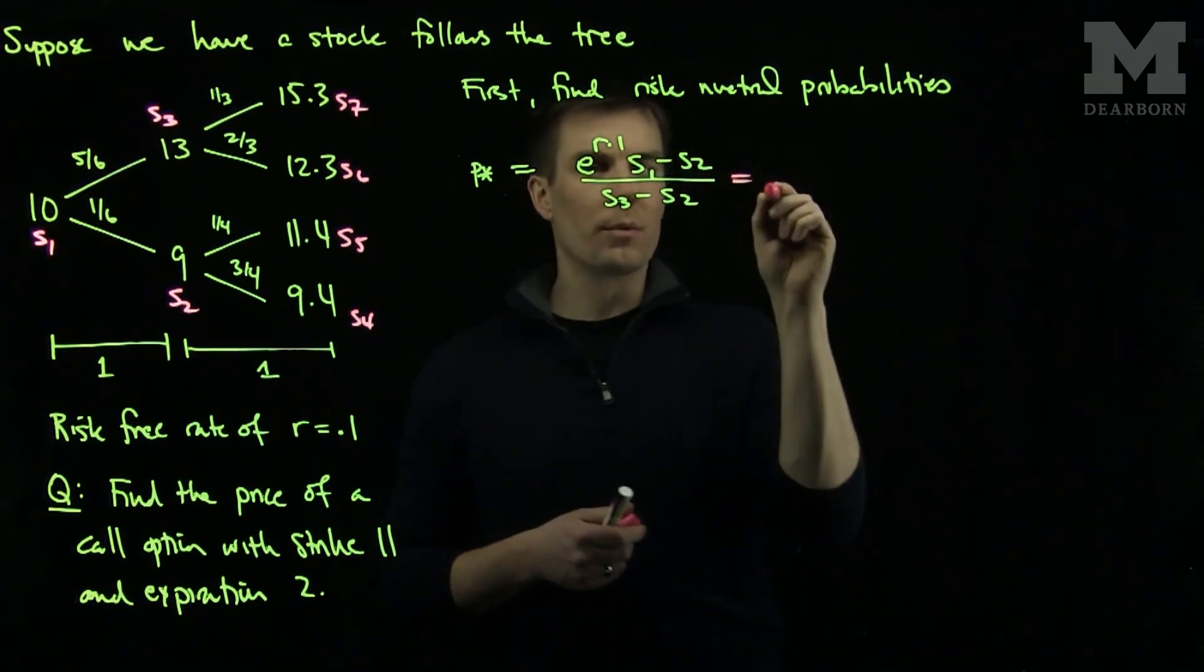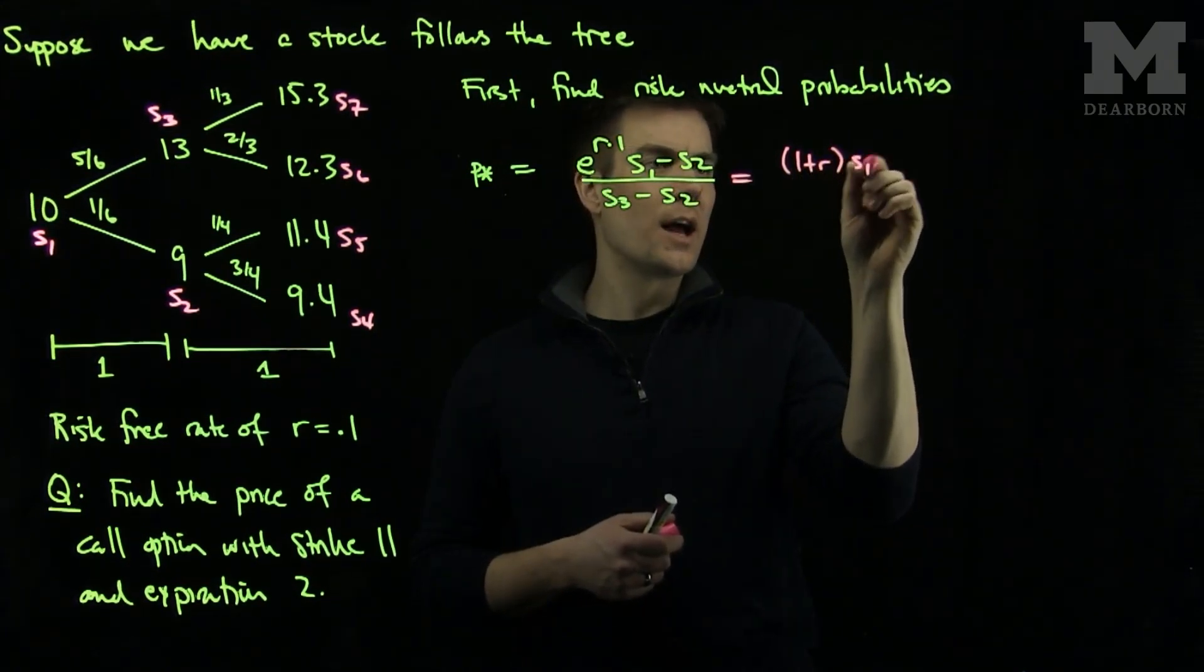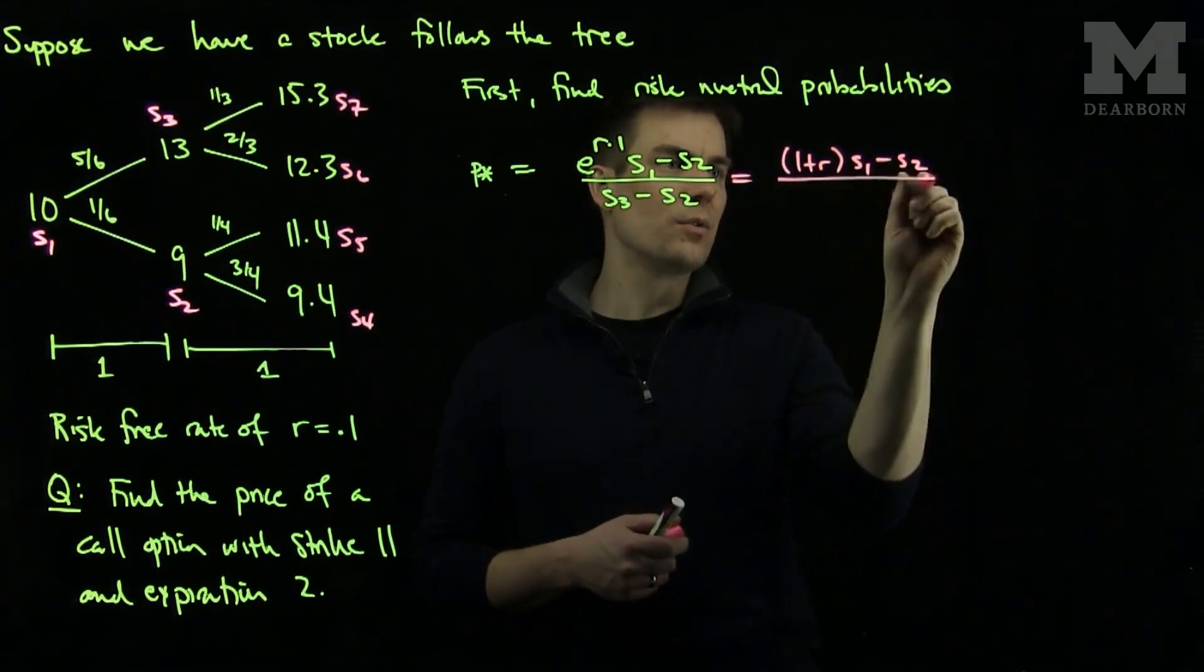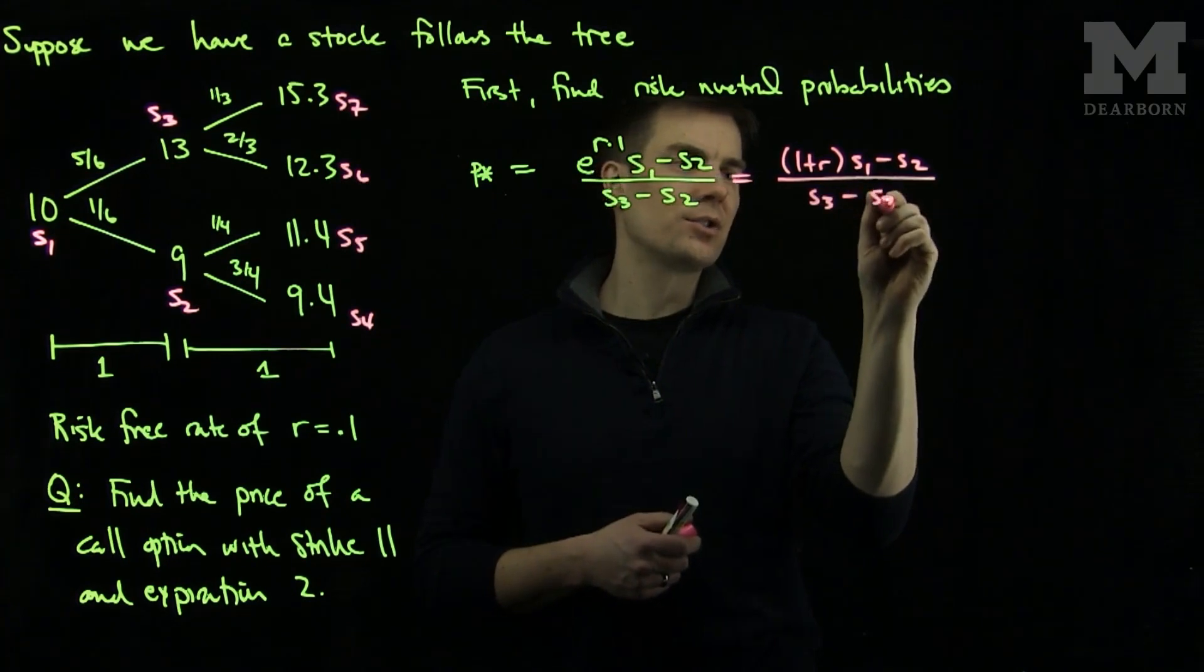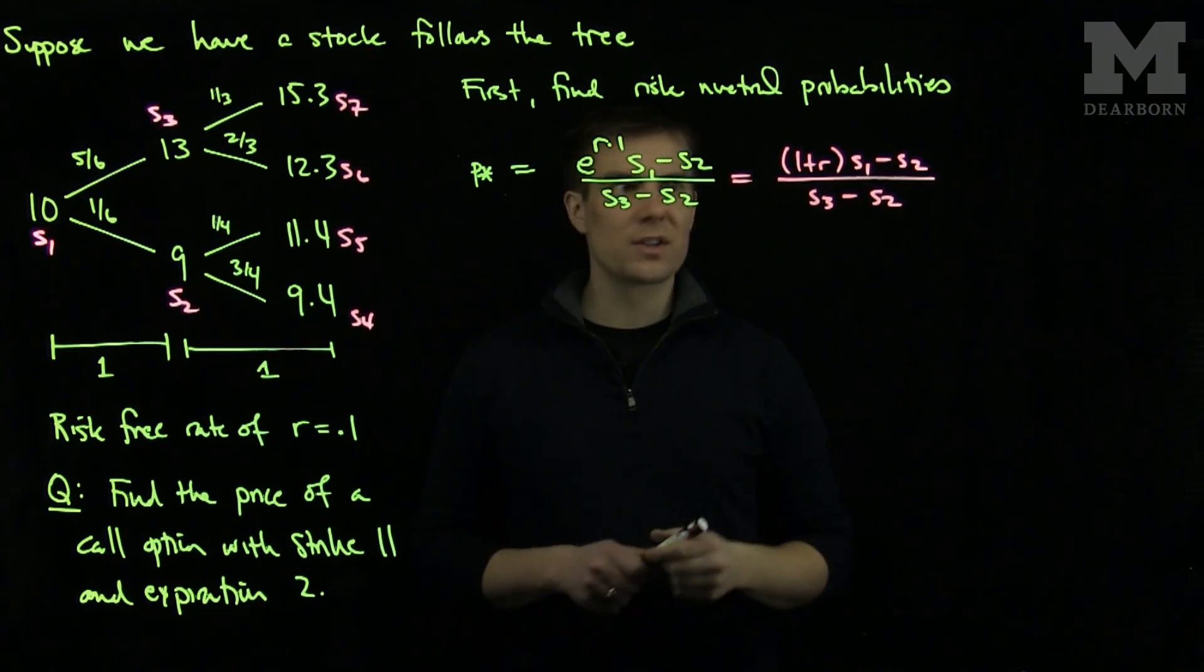So we will replace this probability with a 1 plus r s1 minus s2 over s3 minus s2. Assuming that this is an annual rate of return and not a continuous rate of return.